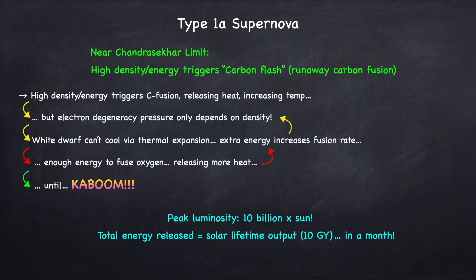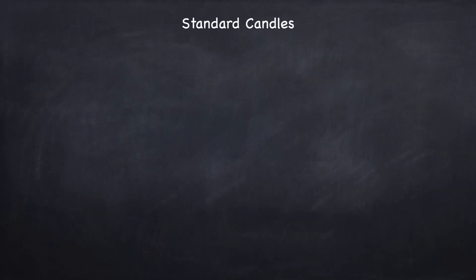Now type 1a supernova, apart from being extremely massive explosions, are very important to astronomers. That's because they're always exactly the same. Because they're all set off at the Chandrasekhar limit, so 1.4 solar masses, with basically the same composition for exactly the same reason. So every type 1a supernova you see is exactly the same. And that means they can be used as what's called standard candles. A standard candle is just some astronomical object that has a known brightness, and so you can use it to measure absolute distances. Because if you see one, you know exactly what its luminosity is, and based on how bright it looks on Earth, you can figure out how far away it was.